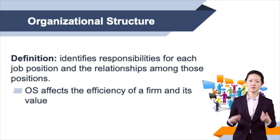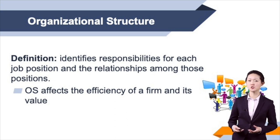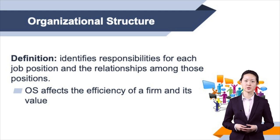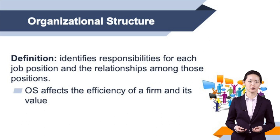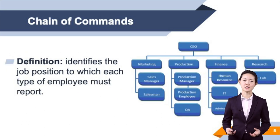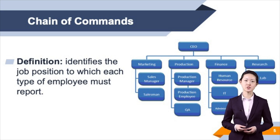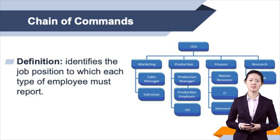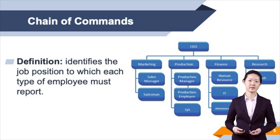In general, a firm wants to establish an organizational structure that ensures that each employee is properly guided and monitored by someone above them to do their jobs efficiently. This will enable a firm to produce its product or service at a relatively low cost. A firm's organizational structure can be illustrated by organizational charts which show the interactions among different job positions. This chart indicates the chain of command which identifies job positions to which each employee must report, and also illustrates who is responsible for various tasks.